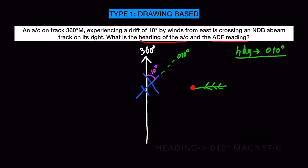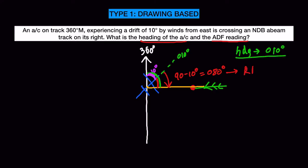So the heading of the aircraft is 010 degrees and the relative bearing, which is the ADF reading, will be 080 degrees. The ADF reading is the angle between the nose of the aircraft and the station. The whole angle to abeam the track is 90 degrees; subtracting the 10-degree drift gives us 080 degrees as the relative bearing.